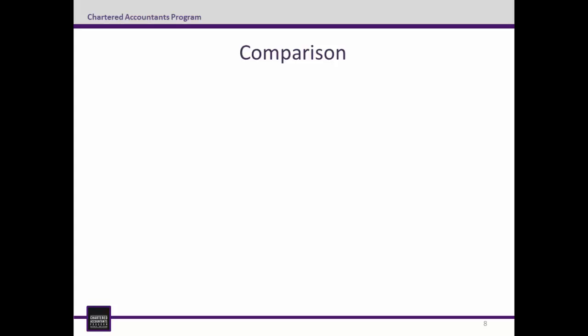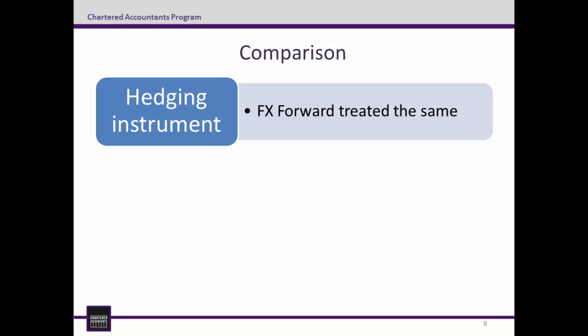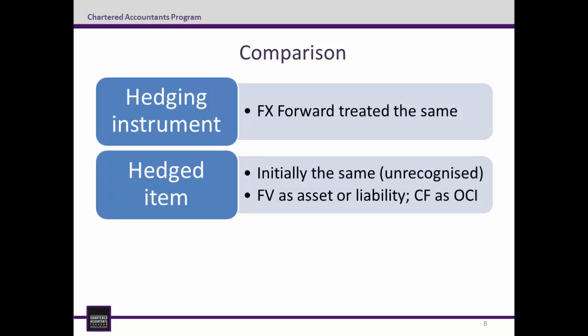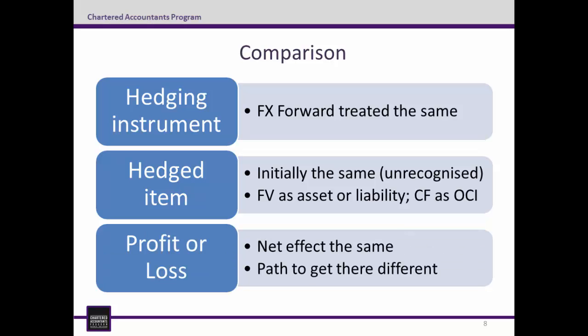The final step is to compare the two methods. First, the treatment of the forward: it gets accounted for in the same way for both methods — whatever the fair value of the forward is at the date of the entry is what the balance needs to be in the balance sheet. Second, the treatment of the firm commitment: this is where the main difference is. Under the fair value method, the fair value of the firm commitment is recognised in the balance sheet, whereas for the cash flow method, the fair value of the firm commitment is recognised in OCI. Third, profit or loss effects: the net effect on profit or loss is the same for each method, however the entries required are slightly different. For the fair value method, this is by offsetting gains and losses on the hedging instrument and hedged item, whilst for the cash flow hedge, it is the ineffective portion of the hedge which goes into profit or loss. And with that, we have now walked through worked example 9.1. I hope that helped.